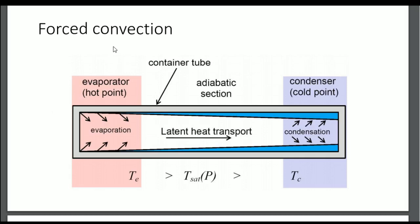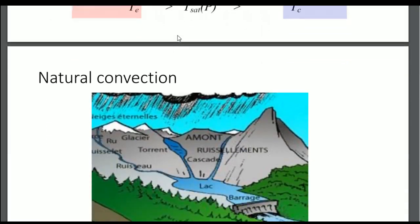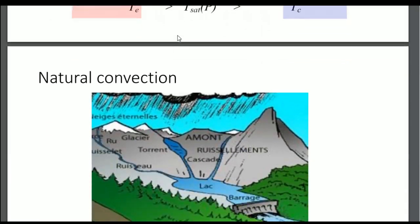This should be opposed to diffusion — diffusion means there is no movement, the fluid just diffuses in the pipe. Here we talk about convection, and this should also be opposed to natural convection, which happens when the flow is natural.